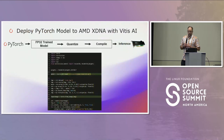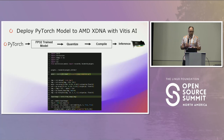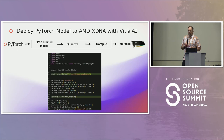We also mentioned XDNA — the FPGA side. There isn't a built-in path in PyTorch, but it can take PyTorch models and convert them to run inference workloads on most of those devices. I'll talk a little more at the end about how we're merging some of this work all together.